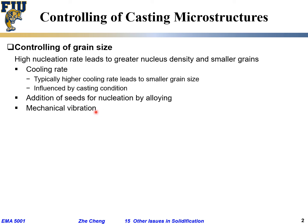A third method is mechanical vibration during solidification. You can use sonication or magnetic stirring to vibrate the liquid melt and break off the small dendrite branches, so that we have smaller equiaxed nuclei for subsequent growth. This also helps to reduce the grain size.